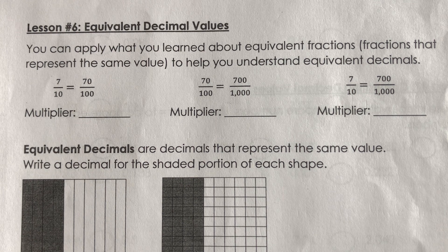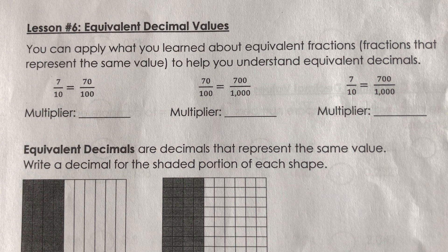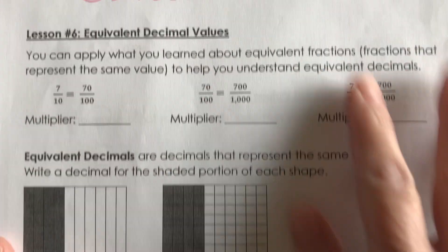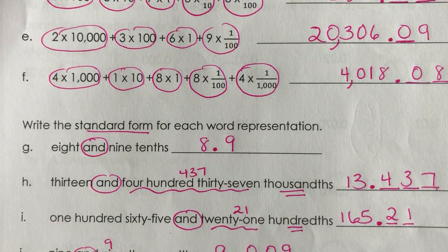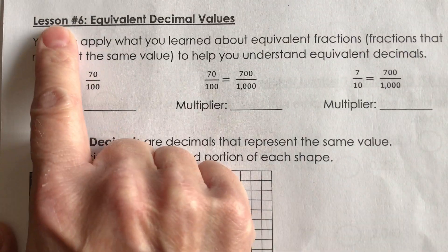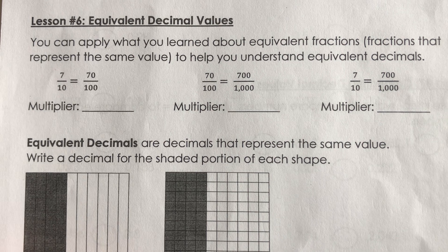So you need your math packet, you need a pencil, and you're going to want to open up your Unit 2 math packet up to page 9. And we're going to have the rest of Lesson 5 above this. So as you look down, it should say Lesson Number 6, Equivalent Decimal Values.